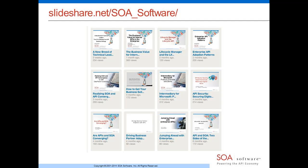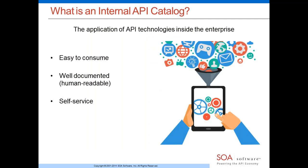Moving on to today's topic about internal API catalogs and internal API communities — these terms are used interchangeably. A lot of people talk about internal APIs, internal API communities, and internal API catalogs. So can you explain what an internal API catalog is and what an internal API community is?